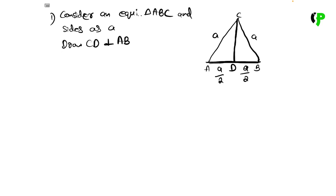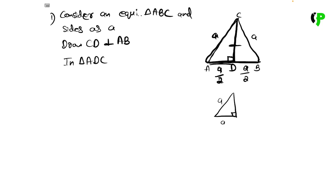Consider triangle ADC. Angle ADC is 90 degrees. AD is A by 2, and AC is A. This is a right triangle. A square is equal to base square plus altitude square.